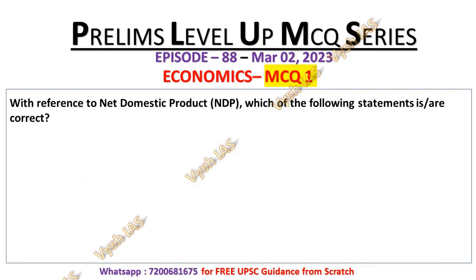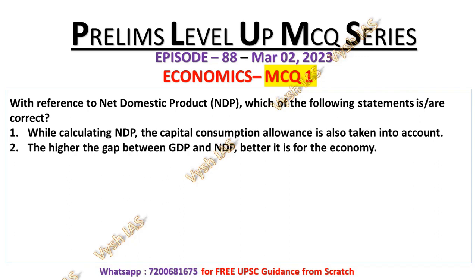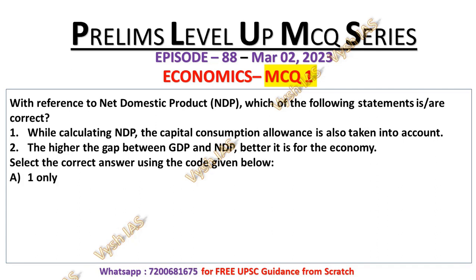Today's MCQ number 1: with reference to net domestic product, which of the following statements are correct? Statement 1: while calculating NDP, that is net domestic product, the capital consumption allowance is also taken into account. Statement 2: the higher the gap between GDP and NDP, the better it is for the economy. The options are 1 only, 2 only, both 1 and 2, neither 1 nor 2. I will give you 10 seconds. Try to answer this question and write it in the comment section.